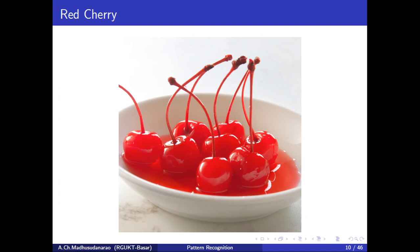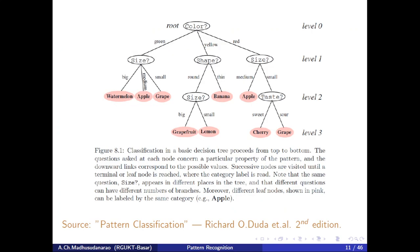That means the features correspond to the properties of the objects. Properties means that can be taste, size, shape, or color. These are the features or properties that we are going to use in our decision trees.